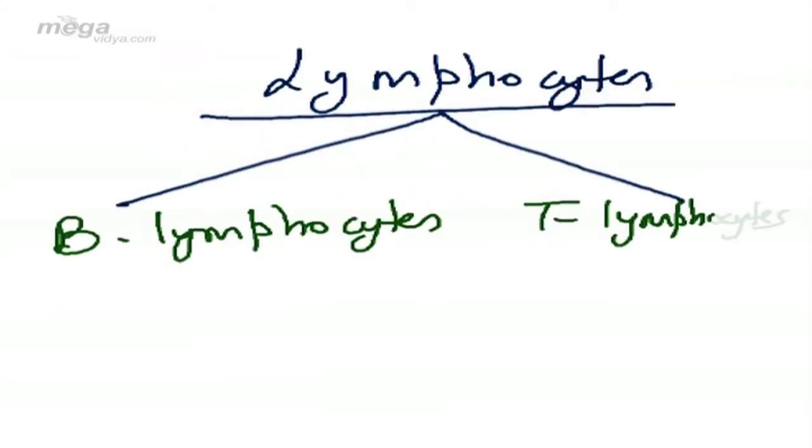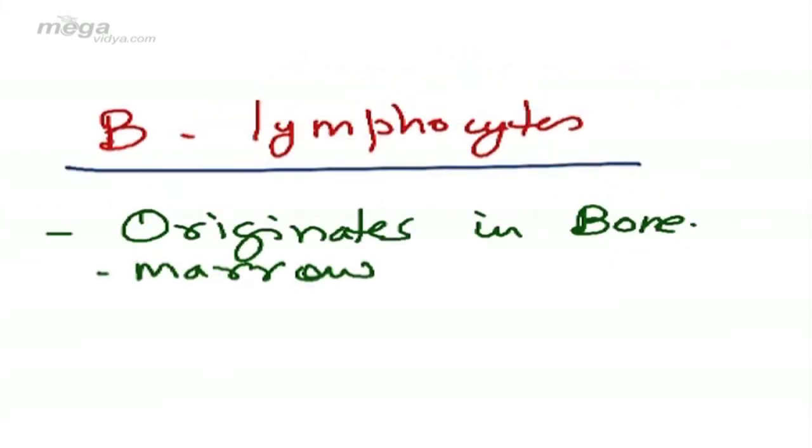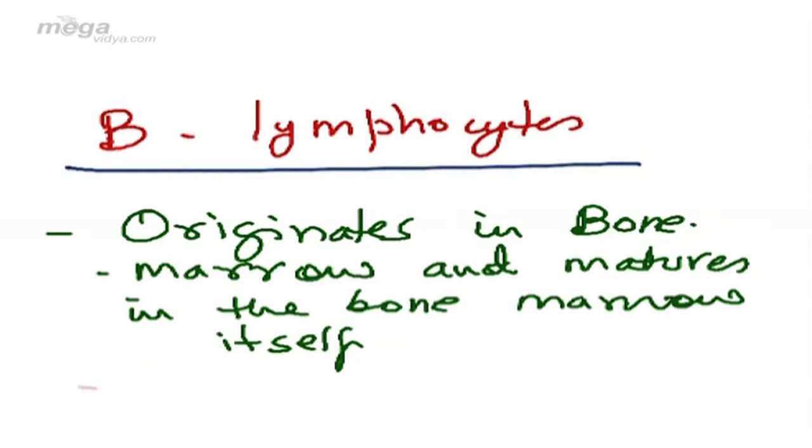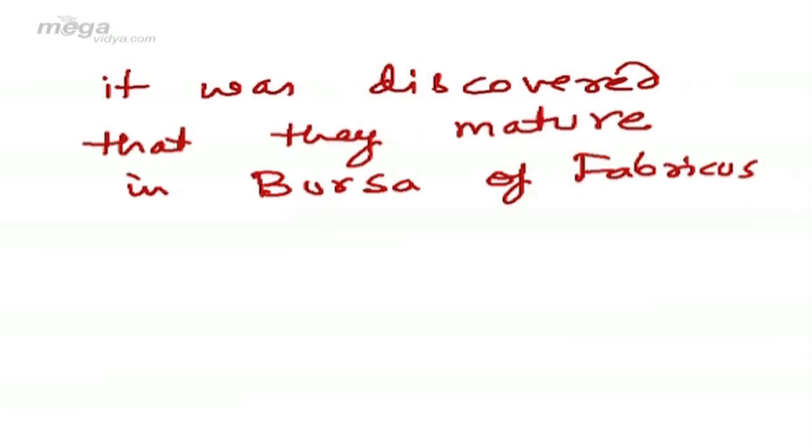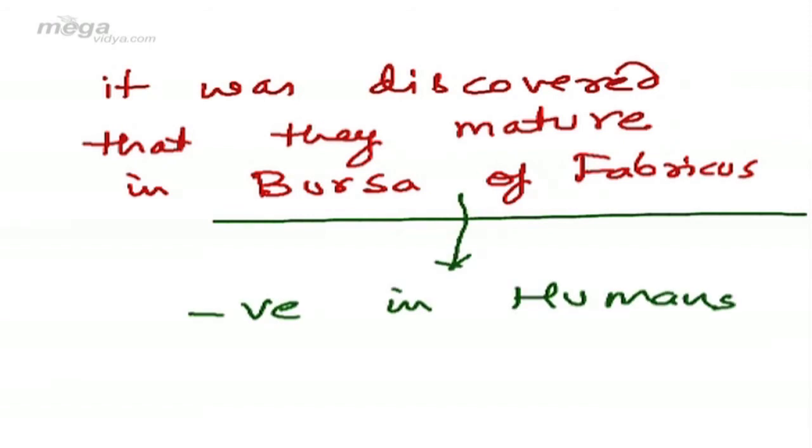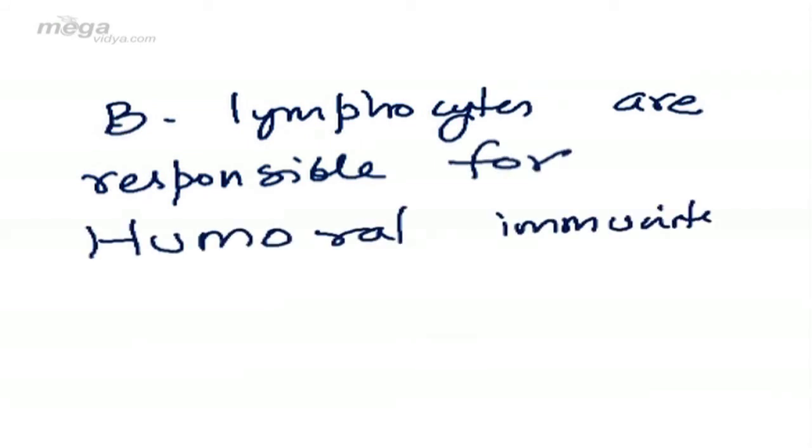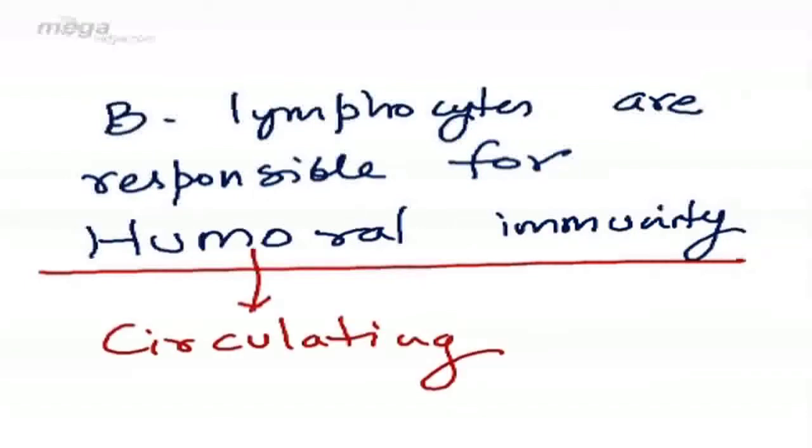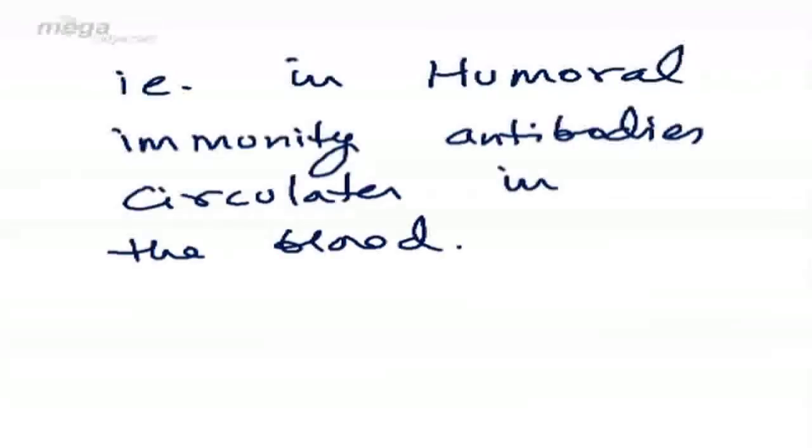First, B lymphocytes. They originate in bone marrow and mature in the bone marrow itself. However, in birds, it was discovered that they mature in a lymphoid organ called Bursa of Fabricius. This organ is absent in human beings. B lymphocytes are responsible for humoral immunity—very important question. Humor means circulating, that is, humoral immunity. Antibodies circulate in the blood.